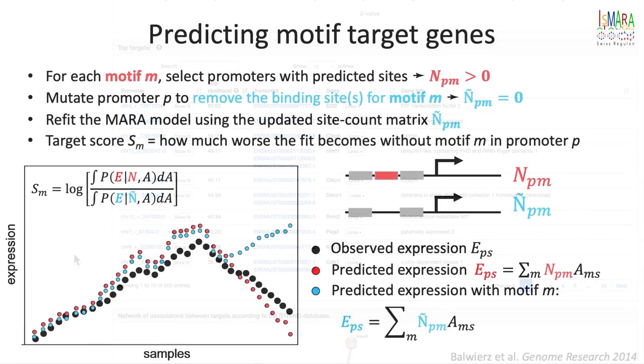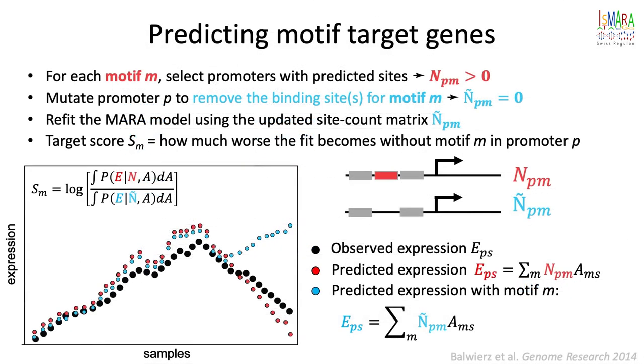This significance is calculated as follows. For each promoter that contains predicted binding sites for the motif M, we calculate how important these sites are for fitting the observed expression profile. We have the observed expression profile of the promoter, shown here in black, and in red the expression profile predicted by ISMARA using the original site count matrix. We then remove the binding site for motif M from the promoter P, leading to this new blue site count matrix, and recalculate the predicted expression profile, shown here in blue.